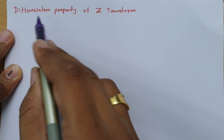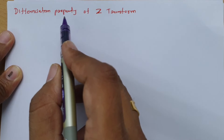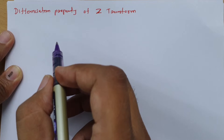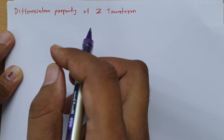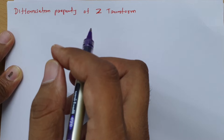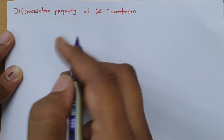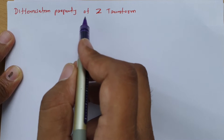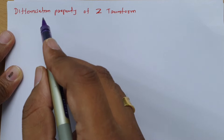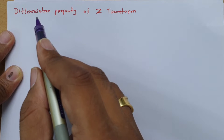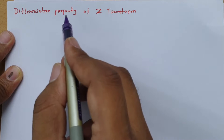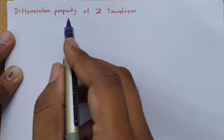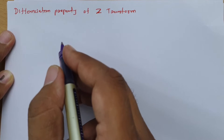Without the differentiation property, there are a few problems which are extremely difficult to solve using the normal way. I will explain one problem by which we can understand how to utilize the differentiation property to solve a given signal's Z-transform.